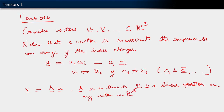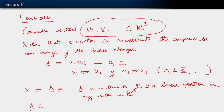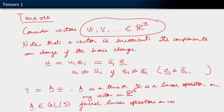It essentially represents a linear operation. It is a linear operator on any vector in three-dimensional space. Just as we write our vectors u, v, and so on as belonging to R3, we introduce a different mathematical space for tensors. We say A belongs to a mathematical space we denote as GL3 — the group of general linear operators on vectors in R3. The three in GL3 refers to the three dimensions in R3.